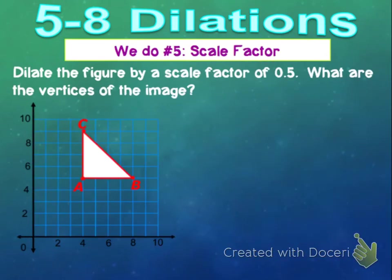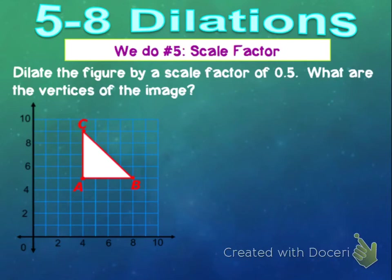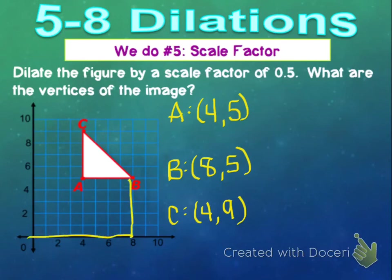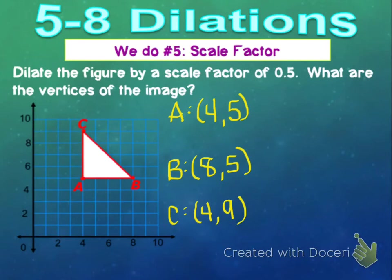We're going to do one more together, and then you'll have two to try on your own. This one asks us to dilate the figure by a scale factor of 0.5, which is one-half. First, list out the coordinates of A, B, and C. A is located at (4, 5), B is located at (8, 5), and C is located at (4, 9).